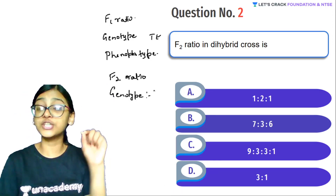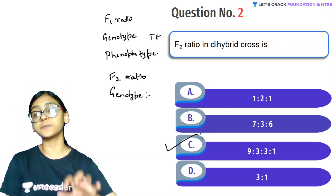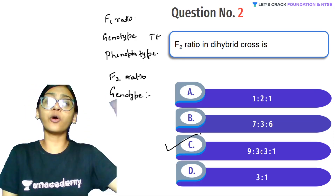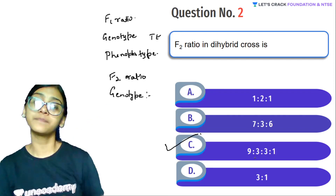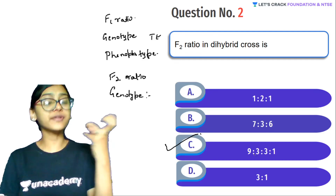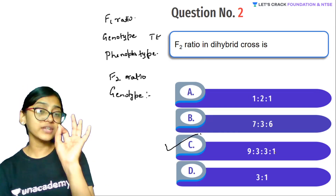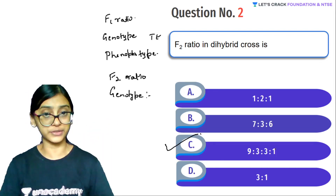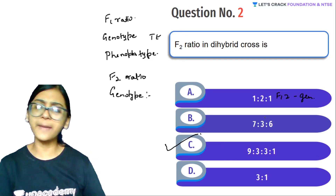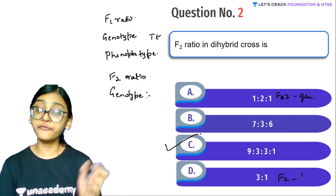The phenotypic ratio of F2 generation in a dihybrid cross is 9:3:3:1. Nine out of 16 plants show yellow round seeds, three show green round seeds, three show yellow wrinkled seeds, and one out of 16 is the most recessive — green wrinkled. For monohybrid cross, F2 genotypic ratio is 1:2:1, and F2 phenotypic ratio is 3:1. These are very important ratios to know.